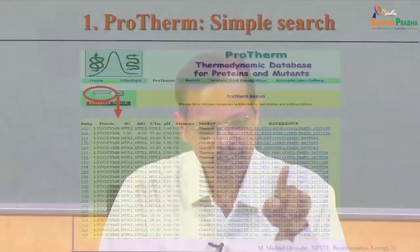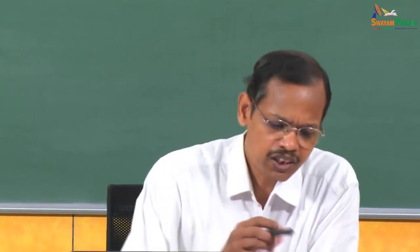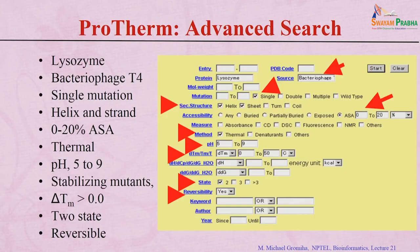There are two types of search options: basic search and advanced search. Basic search searches all entries using keywords, protein names, or source names — for example, typing 'lysozyme' and clicking 'go' returns all data containing that term. The advanced search provides different options: you can search by protein name, source, or mutation type — for example, selecting single mutation only.